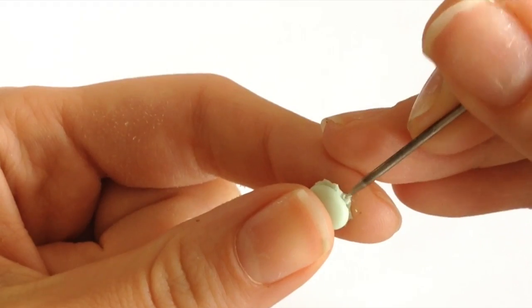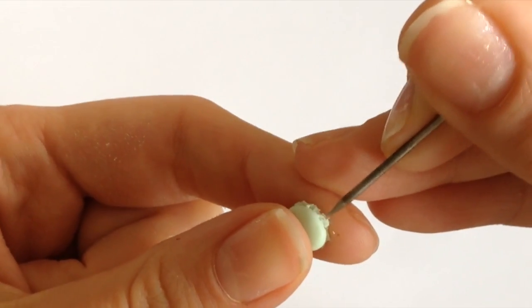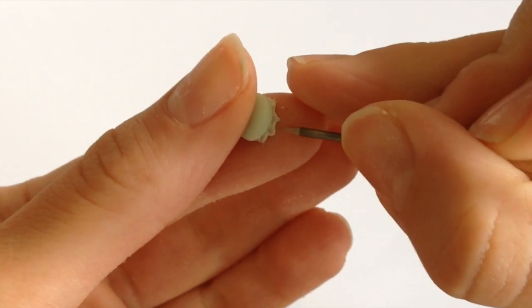You're going to notice that there's some pieces of clay that kind of fall off, but you want to stick it back on to make it look even more organic. The messier, the better.